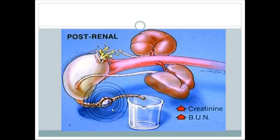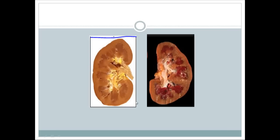Post-renal causes involve obstruction anywhere in the post-renal tract — ureter, bladder, or urethra — which increases pressure back to the kidney, reducing urine production. Specific causes include ureteral stricture, bladder stones or cancer, prostatic hyperplasia or cancer, and urethral stricture.